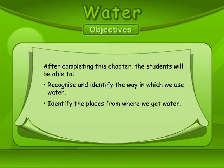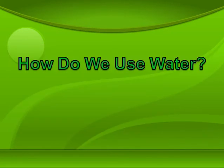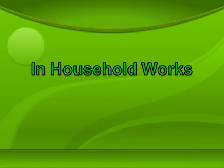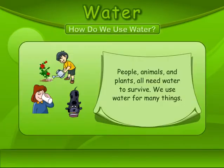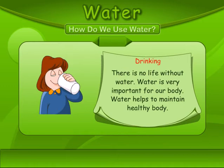After completing this chapter, the students will be able to recognize and identify the way in which we use water, and identify the places from where we get water. How do we use water in household works? People, animals and plants all need water to survive. We use water for many things.